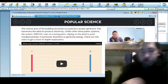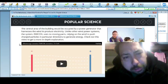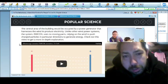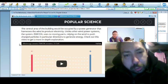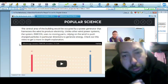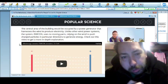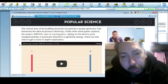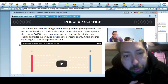This looks like something they would put out in Dubai. The central area of the building would be occupied by a power generator that harnesses the wind to produce electricity. Unlike the wind power system, EW Icon uses no moving parts, relying on wind to push charged particles in particular directions to generate energy.